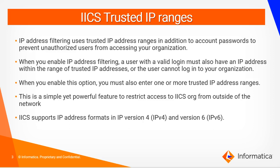IACS trusted IP ranges: IP address filtering uses trusted IP address ranges in addition to account passwords to prevent unauthorized users from accessing your organization. When you enable IP address filtering, a user with a valid login must also have an IP address within the range of trusted IP addresses. Otherwise the user would not be able to login to your organization. It is an additional layer of security imposed on users looking to login to your IACS orgs.